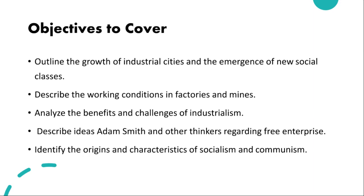In response to the harsh conditions of the Industrial Age, alternative socioeconomic ideologies emerged. Socialism and communism sought to address the inequalities of industrial capitalism. Championed by thinkers like Karl Marx and Friedrich Engels, they proposed a system where the means of production are collectively owned by the people — meaning collectively owned by the government — aimed at advancing a more equitable distribution of wealth and resources.